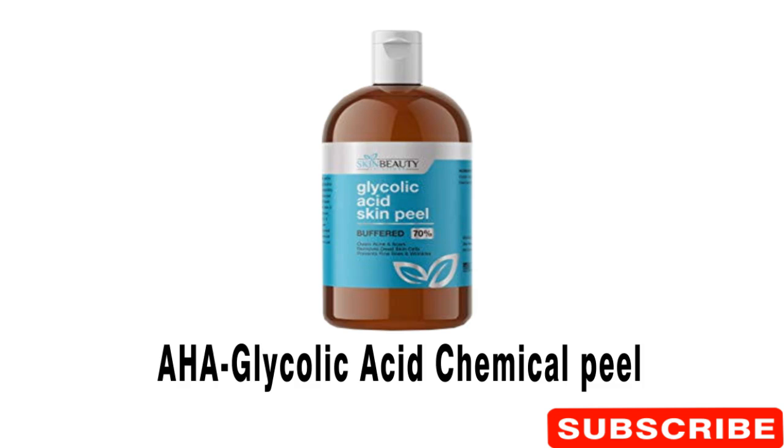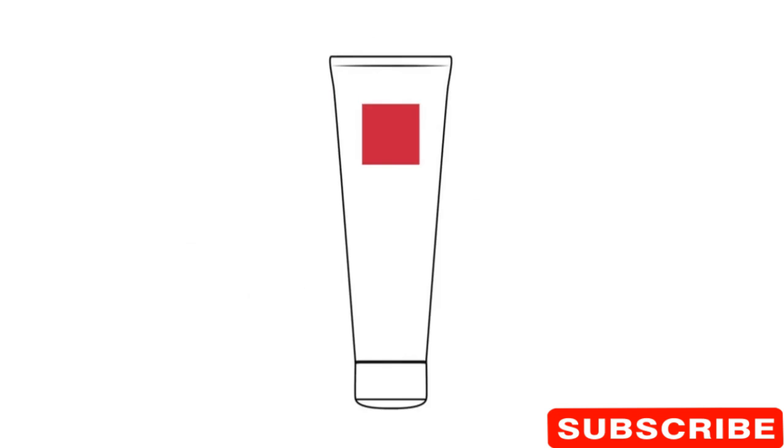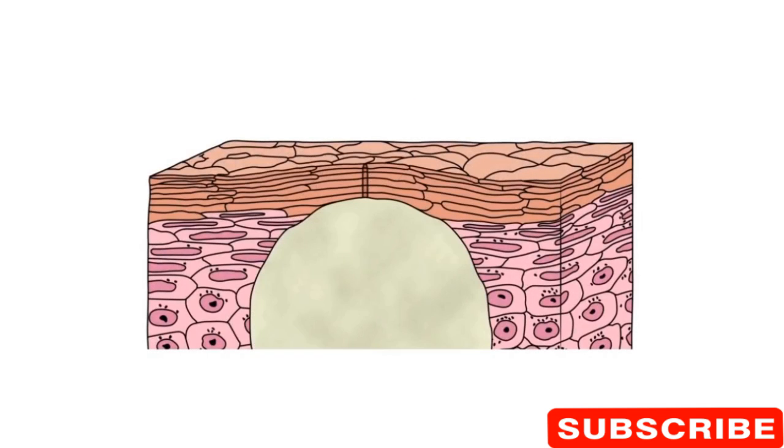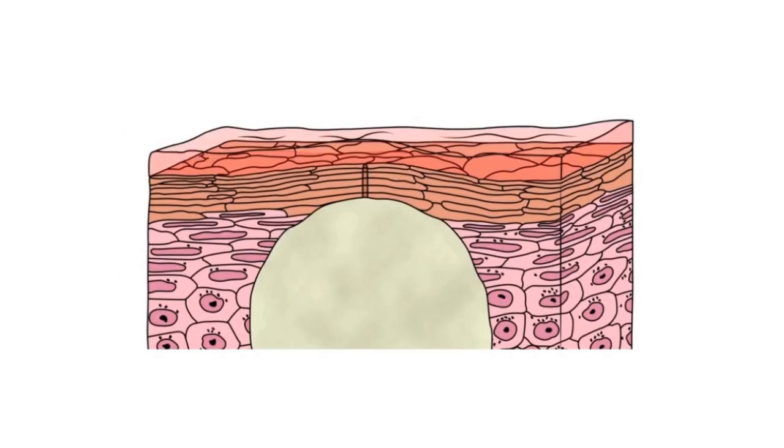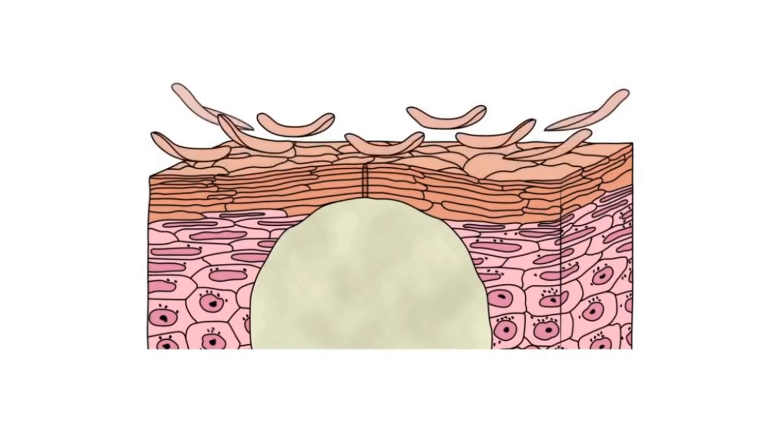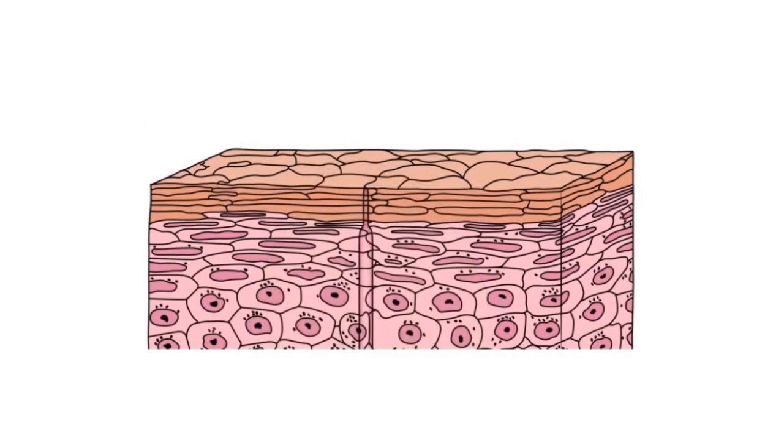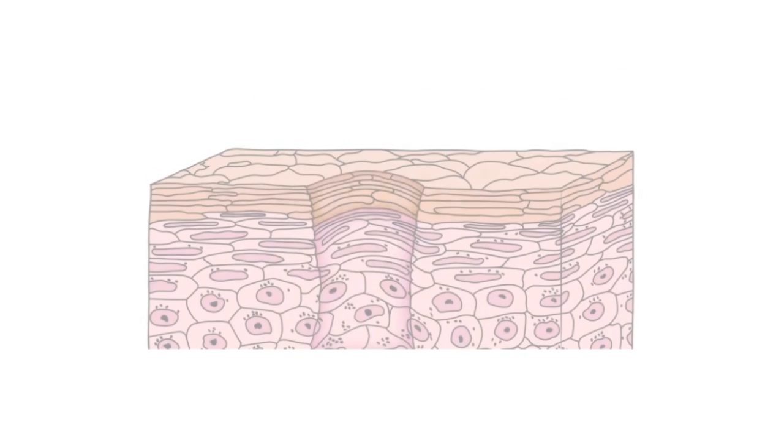First, you need to know about AHA glycolic acid chemical peel. A glycolic acid peel is a chemical exfoliation treatment using alpha-hydroxy acid. It enhances skin color, texture, and overall complexion, improving skin health and appearance.